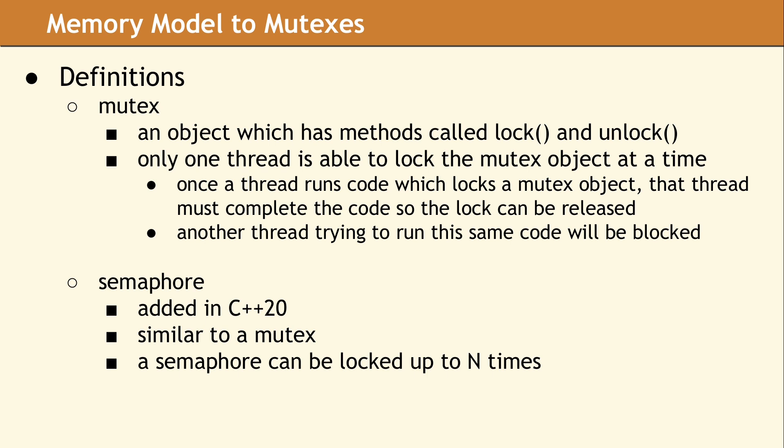There are ways to mess this up — for example, locking two mutexes in a different order. When locking and unlocking a mutex is done correctly, the memory model provides a guarantee. For a given mutex, every unlock will happen before the next lock. According to the standard, every thread is guaranteed to see a consistent view of the results produced by the previous thread.